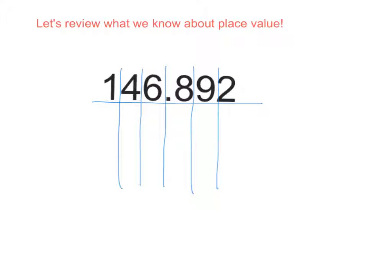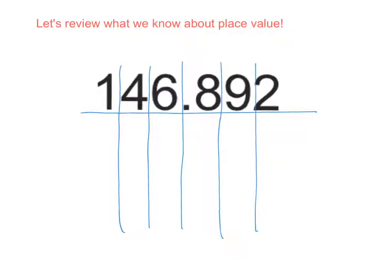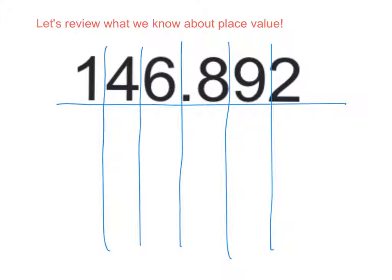Okay, so let's review what we know about place value. When we have a number like this, 146 and 892 thousandths, each digit is in a different place, isn't it? So what do we call this place right here? The 1 is in the hundreds. The 4 is in the tens. The 6 is in the ones. The 8 is in the tenths. And the 9 is in the hundredths.